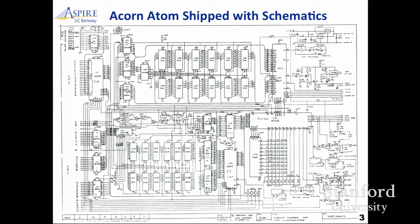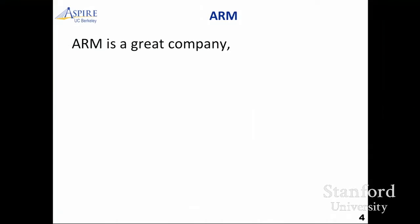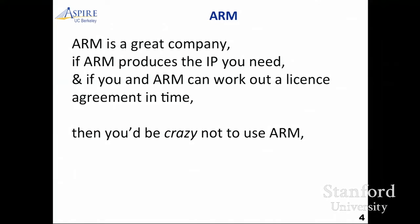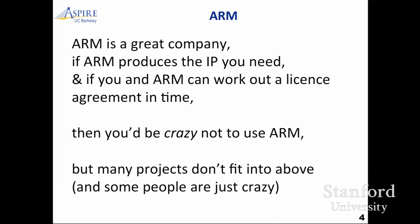The second reason is it's made by Acorn. People have tried to cast RISC-V versus ARM as David versus Goliath. I find that pretty funny. The ARM guys think it's funny too, because they think they're David fighting the other Goliath, Intel. I just want to say a few things about ARM — they're a great company. If they produce the IP you need, and if you can work out a license agreement with them in time, then you'd be crazy not to use ARM. But many projects don't fit into the above, and some people are just crazy.